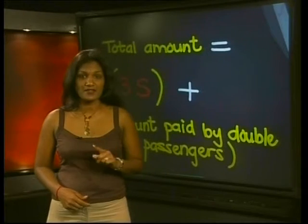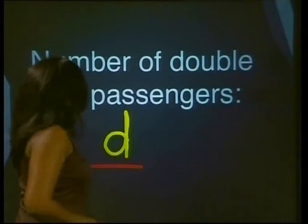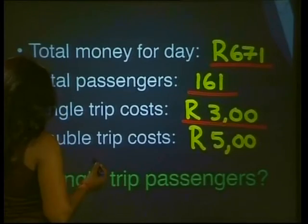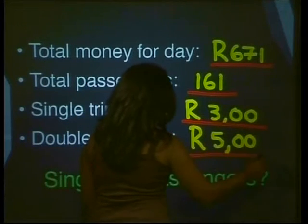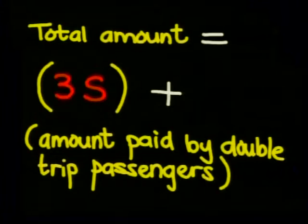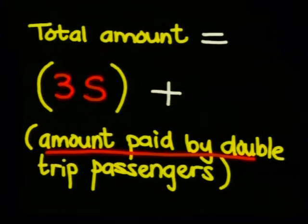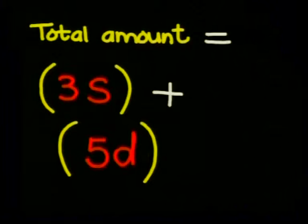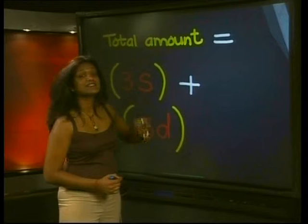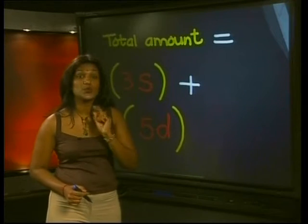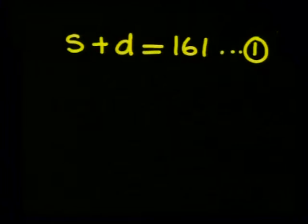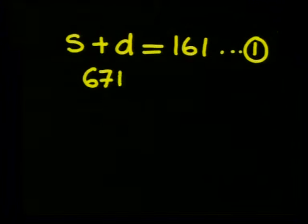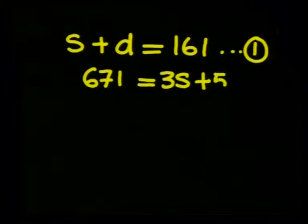Now what about the double trip passengers? If D is the number of double trip passengers and they paid five rand for each trip, then the amount paid by the double trip passengers is equal to 5 times D. We know that the total is 671 rand. So we can write our second equation as 671 equals 3S plus 5D. And this is our second equation.